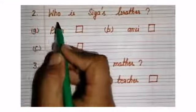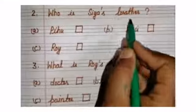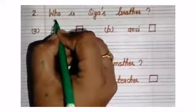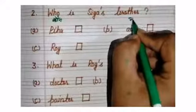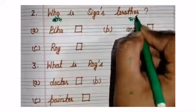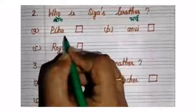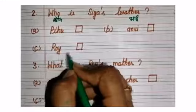Number 2, Who is Sia's brother? Who means kaun? Brother means bhai. Sia ka bhai kaun hai? Option A, Pihu. Option B, Anvi. And option C, Roy.